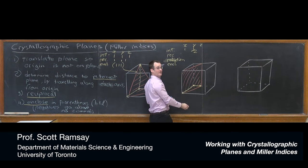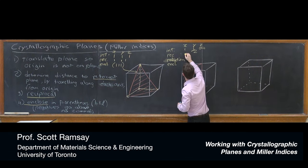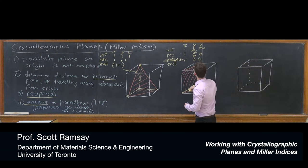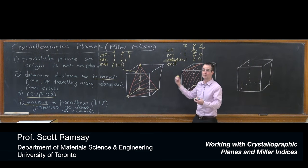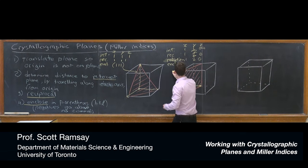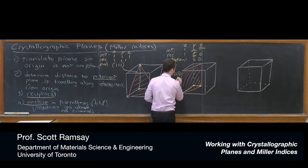Our reciprocal gives us 1, 2, 0. The reciprocal is taking care of the reduction. If we had needed to, we would have cleared the fraction by multiplying across by the lowest common denominator. The enclosure becomes (1,2,0). That's the (1,2,0) plane.